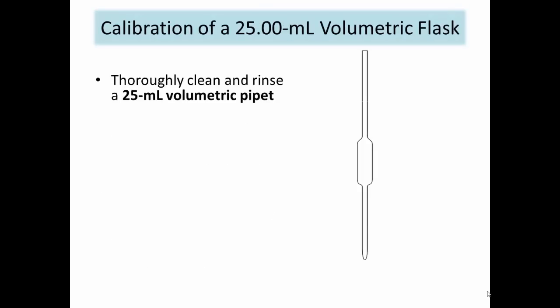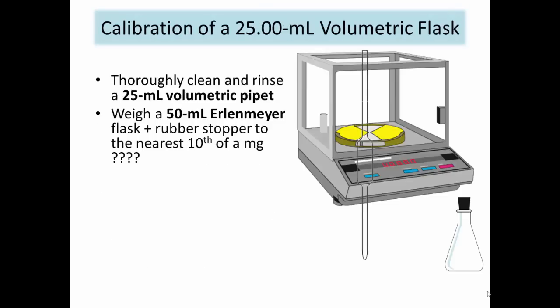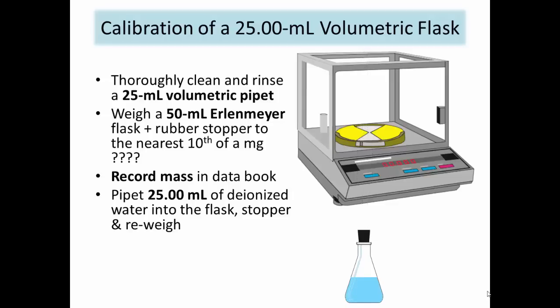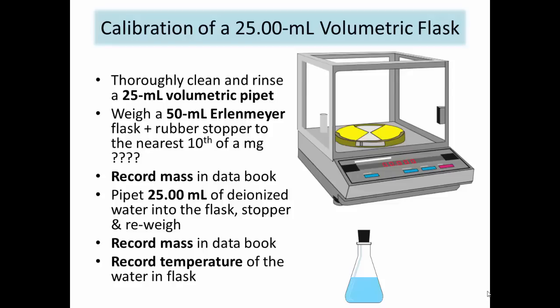Calibration of a 25 ml volumetric pipette is performed similarly. First, thoroughly clean and rinse a 25 ml volumetric transfer pipette. Then, on an analytical balance, weigh and record the mass of a 125 ml Erlenmeyer flask and stopper. If using the same Erlenmeyer flask as before, weigh it again before starting this part of the experiment. Pipette 25 ml of water into the flask using the volumetric transfer pipette. Stopper and re-weigh the flask on the same balance. Record the mass of the flask, stopper, and water, and record the temperature of the water in the flask.